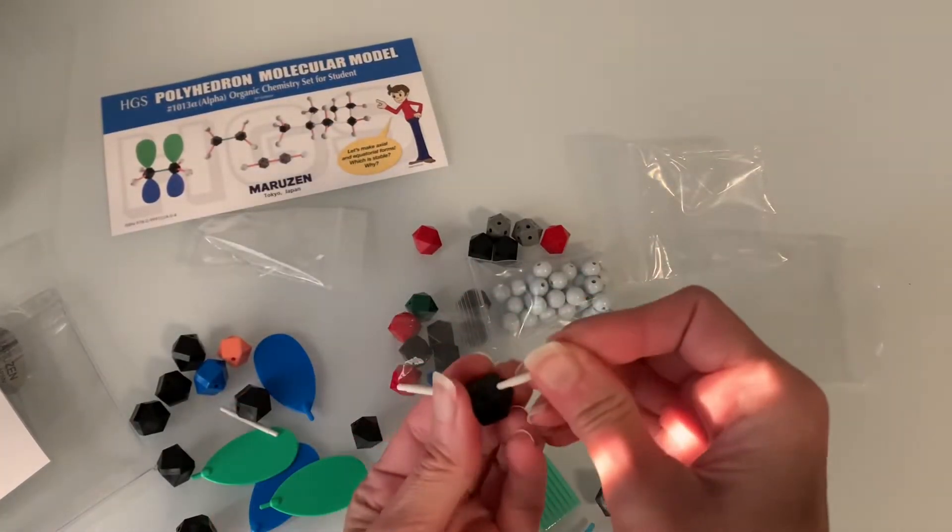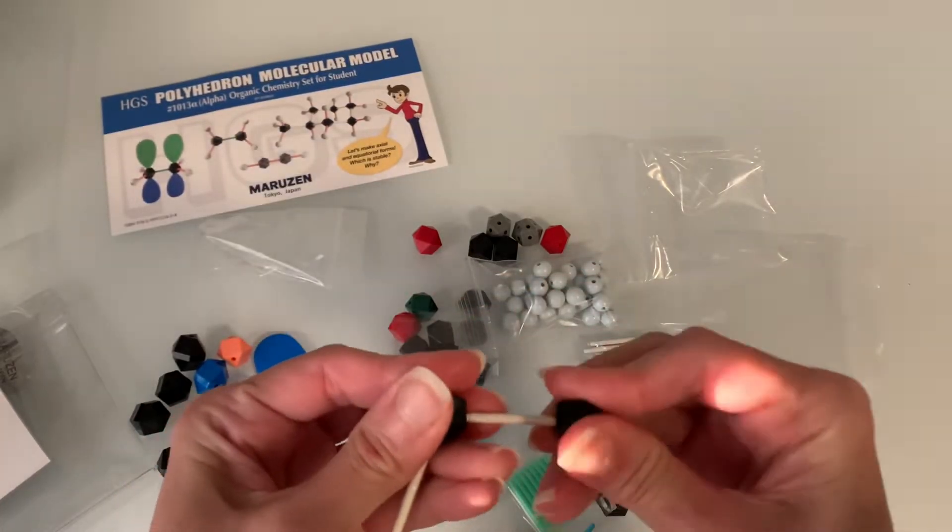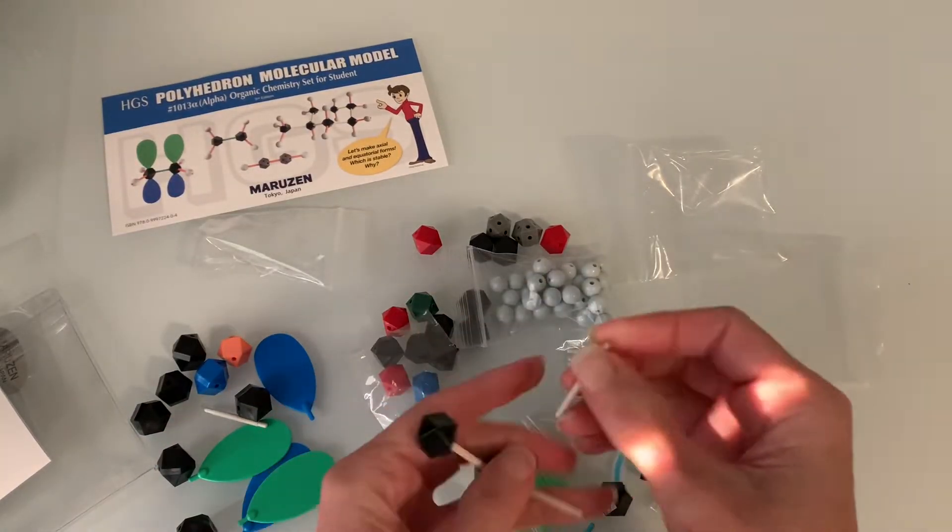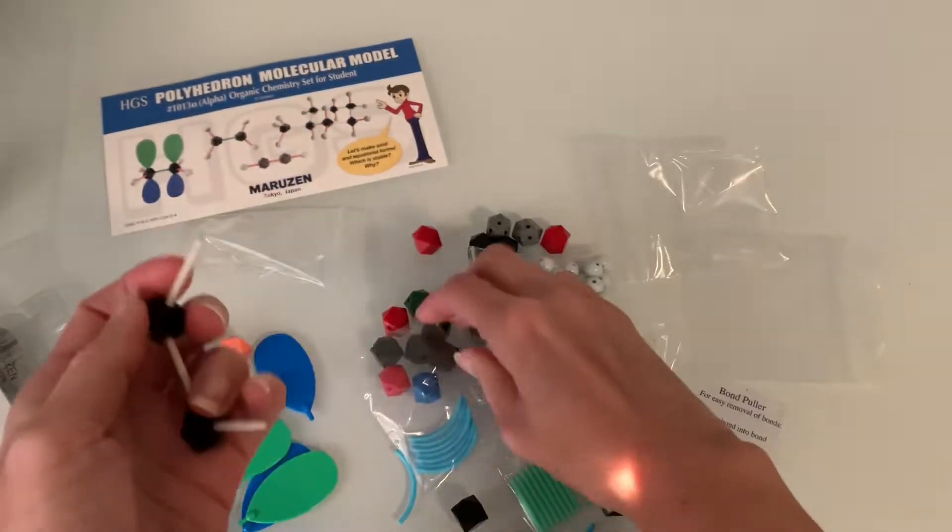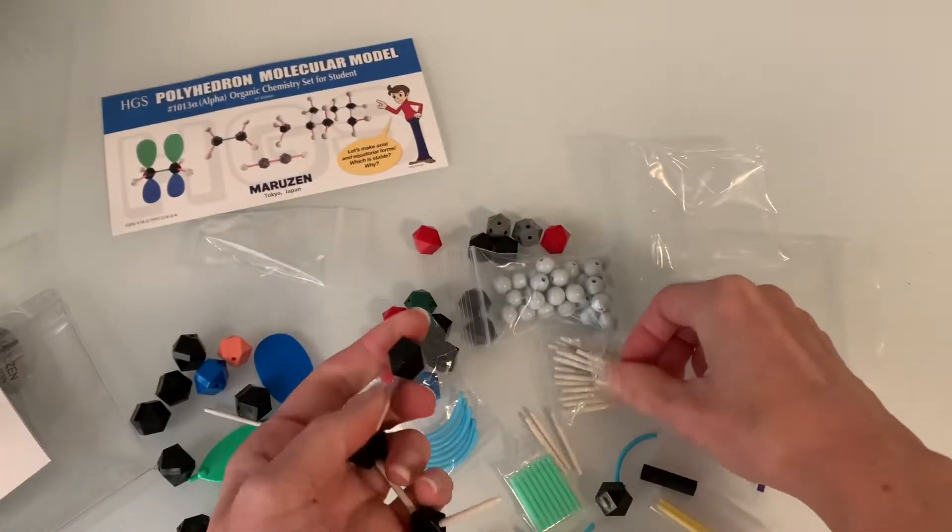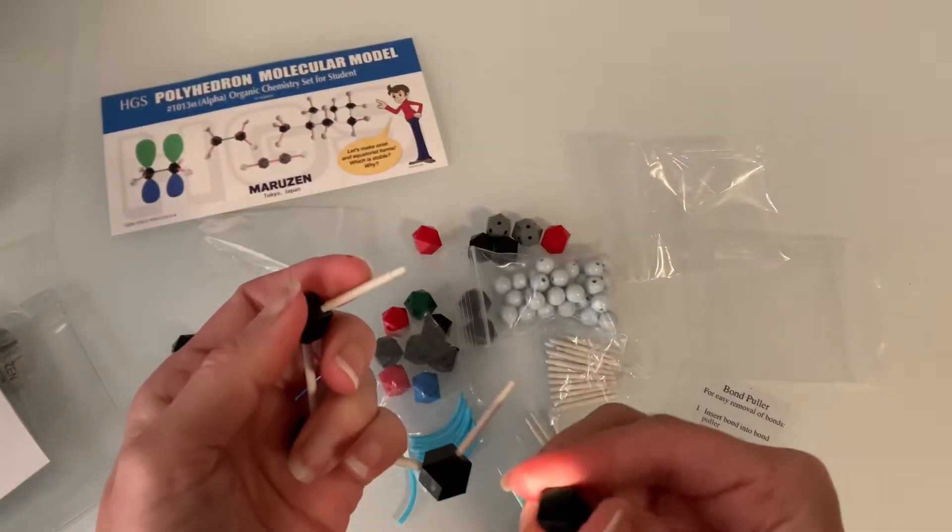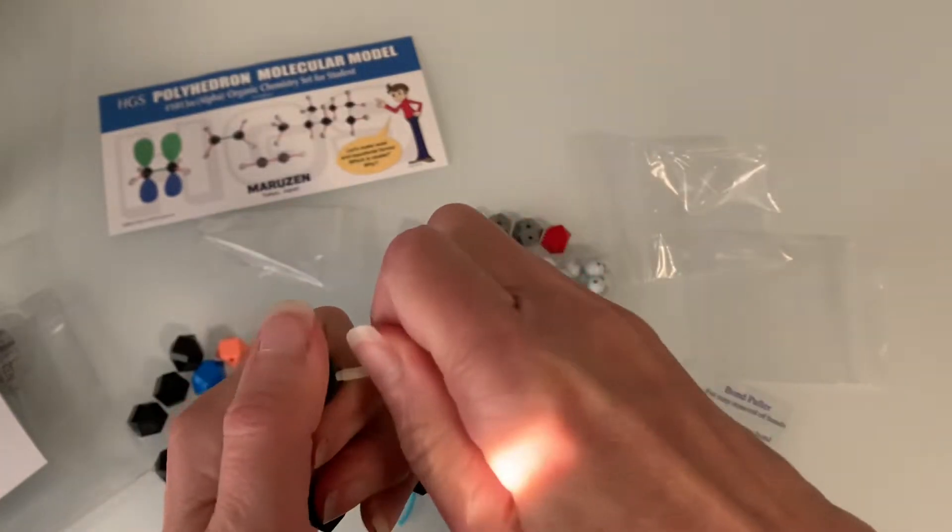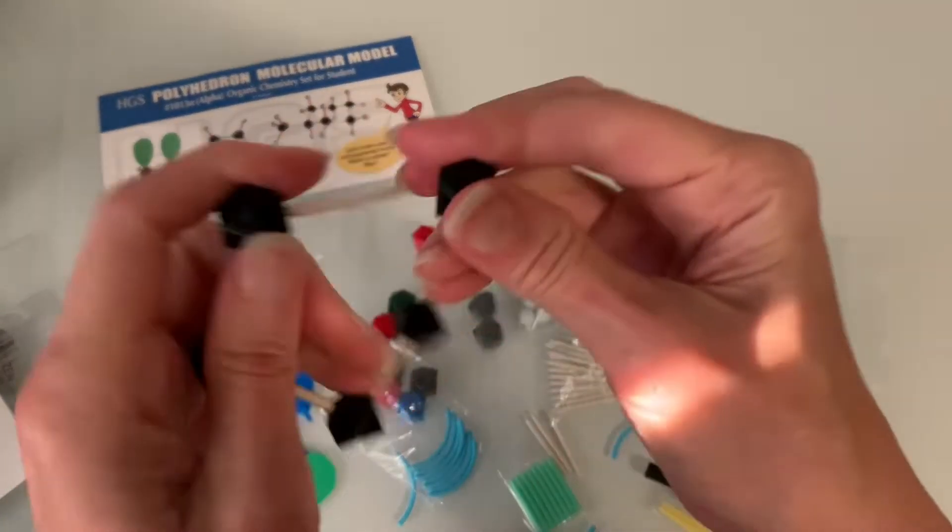The bonds fit very tightly in this set meaning that I didn't have any issues with my molecules falling apart as I was building them. In addition to that the molecules that I built were pretty stiff meaning that I could twist them into different conformations and they would hold their shape without flopping around and this is going to be ideal for any student who is in organic chemistry.